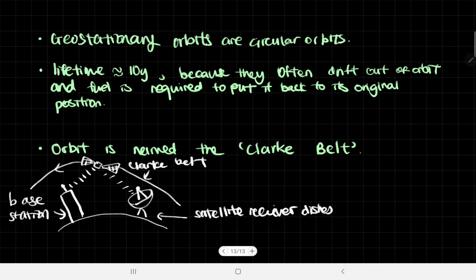The orbit is named the Clark Belt. This exact orbit that all geostationary satellites orbit around is called the Clark Belt. If you look at a geostationary orbit above wherever you live, that's something traveling in the Clark Belt that's going to run out within 10 years or so. That's about it for orbiting around Earth. Thank you for watching.